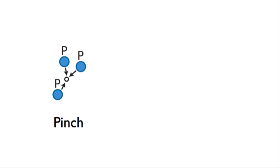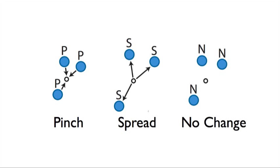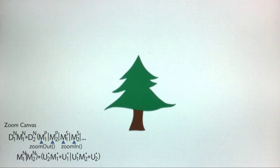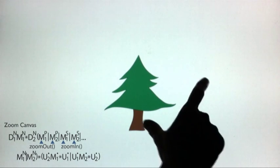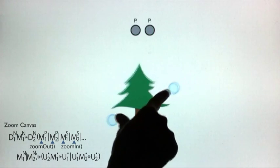A group of touches is determined to be pinching if the touches move towards the centroid of the group. If they move away from the centroid, then they are spreading. Otherwise, there is no change. Here, a pinch zooms out of the canvas, and a spread zooms into the canvas.